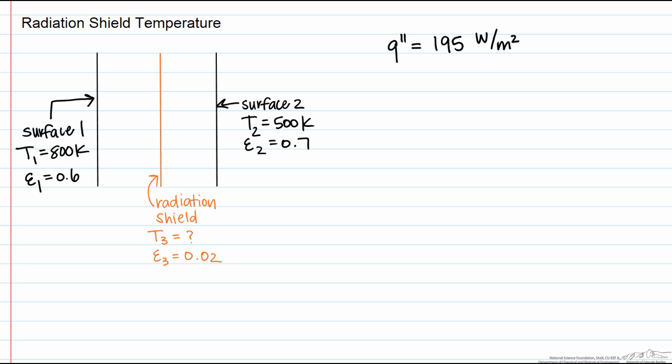We have these two infinite parallel plates with a radiation shield between them. Surface one has a temperature of 800 kelvin and an emissivity of 0.6. Surface two has a temperature of 500 kelvin and an emissivity of 0.7. Finally our radiation shield, which we don't know the temperature of, has a very low emissivity of 0.02.